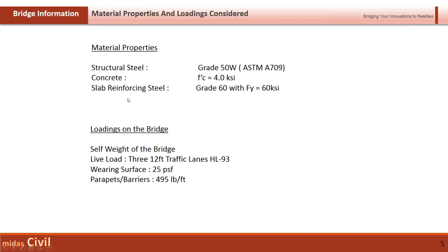For material properties, we're using structural steel ASTM A709 Grade 50W. For concrete, we have a compressive strength of 4 KSI. For slab reinforcing steel, we are using 60 KSI steel material properties.